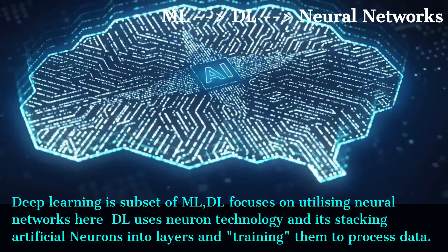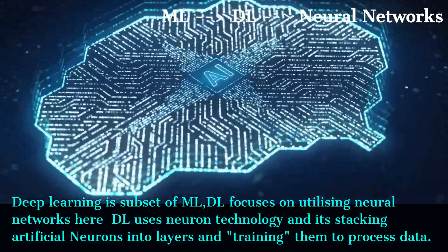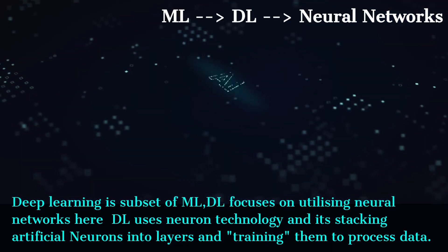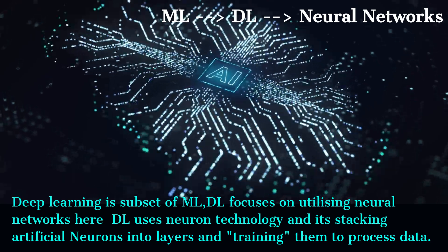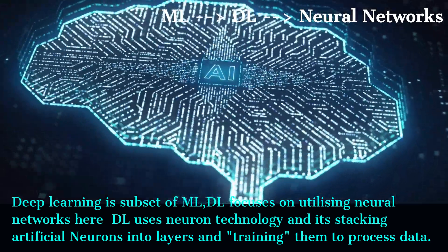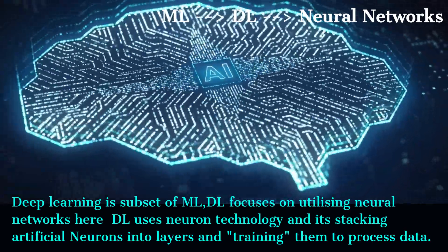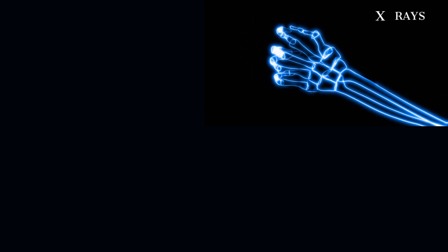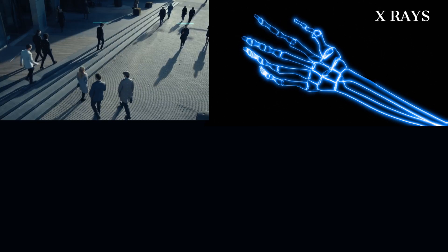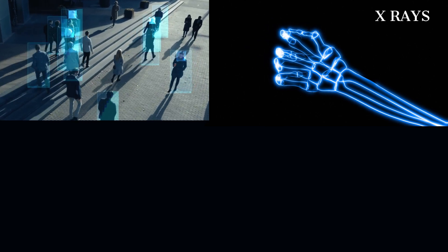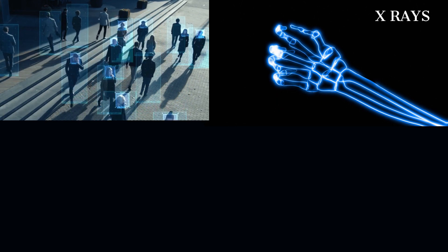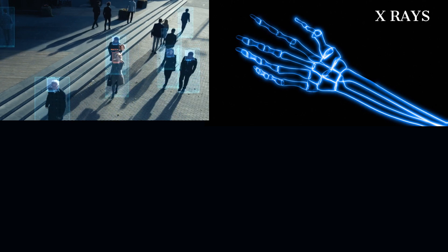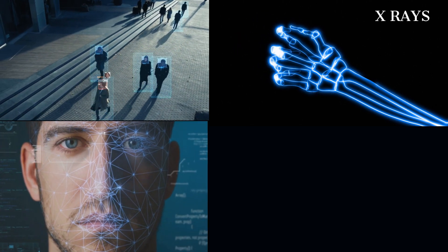Deep learning and neural networks are interconnected. Neural network is a sub-domain of deep learning, where deep learning uses neuron technology. Examples of deep learning include analyzing X-rays to help doctors find medical illnesses, and image recognition — identifying objects and features in images such as people, animals, places, as well as face recognition like identifying faces.